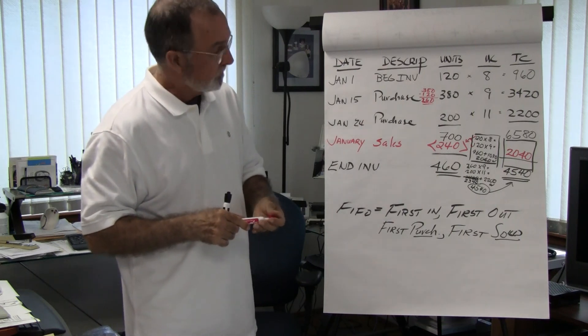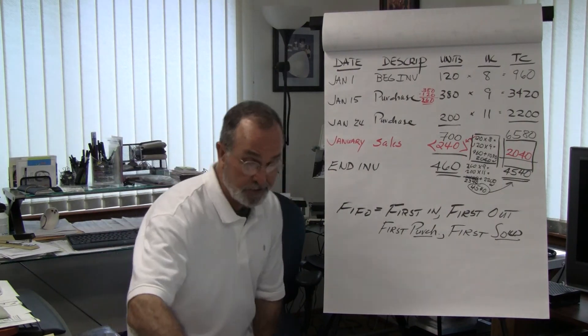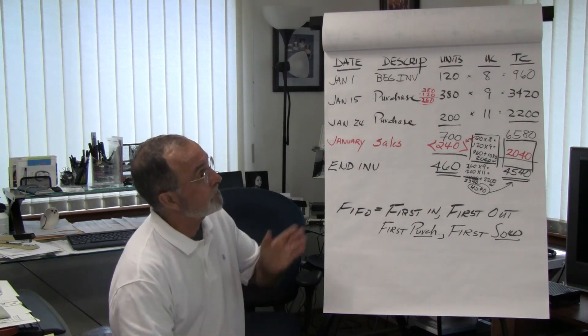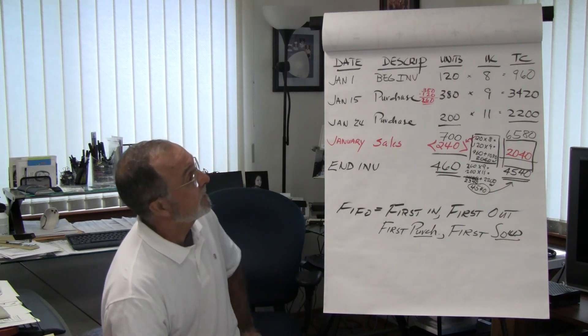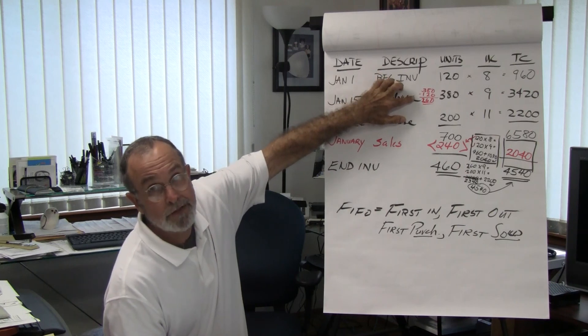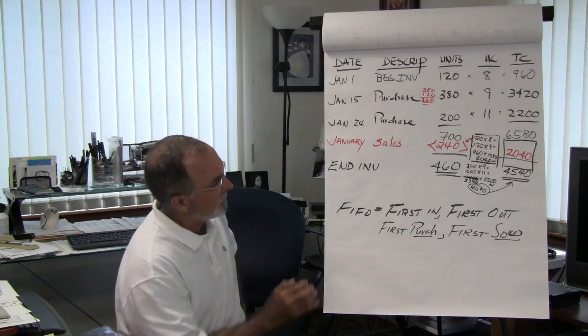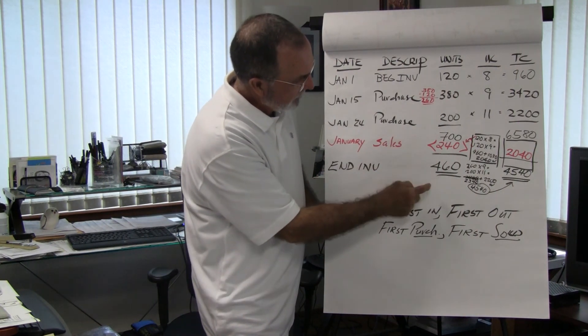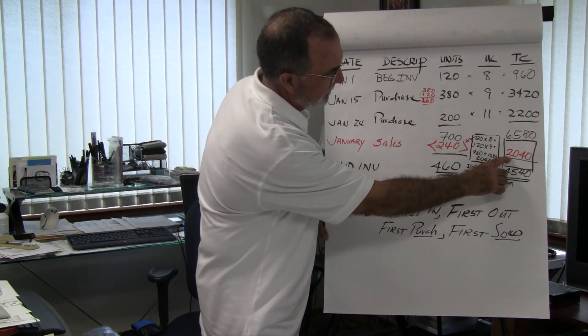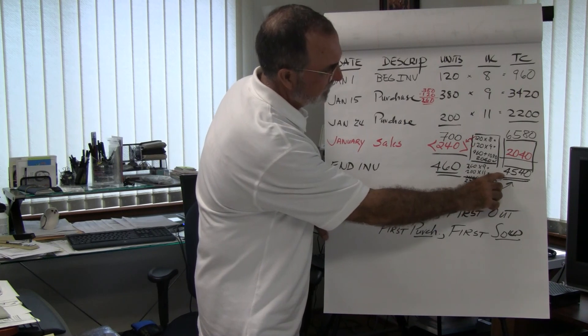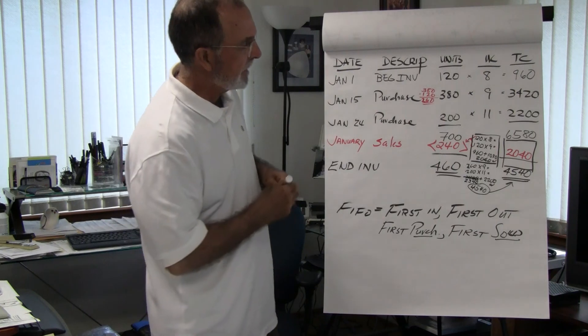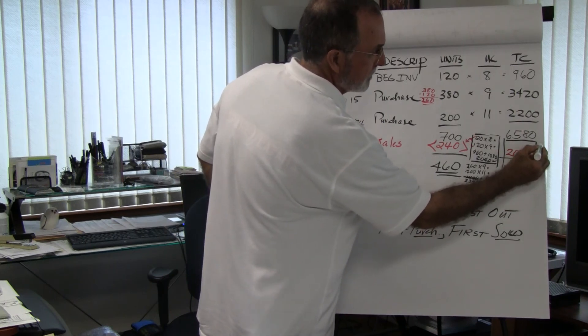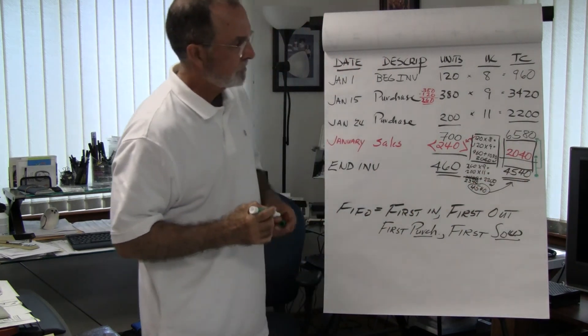I apologize for the error but at the same time it's probably good that I made it because it shows that we all make errors all the time and so we have to be very careful when we do our calculations, even relatively simple calculations like what I did. And I made this error without using my calculator, I should have used my calculator. Okay, so again, first in first out periodic inventory, we have calculated our cost of sales at $2,040 and our ending inventory at $4,540. Note that the total of the cost of sales plus the ending inventory is always equal to cost of goods available for sale.